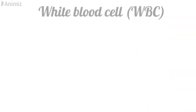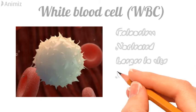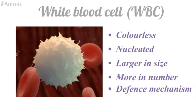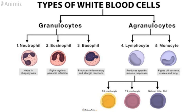The third component of blood is white blood cells, also called leukocytes. They are colorless, nucleated, larger in size, and have a role in the defense mechanism of the body. White blood cells are categorized into two types: granulocytes and agranulocytes. Granulocytes have a granular appearance, while agranulocytes do not. Granulocytes are of three types: neutrophils, eosinophils, and basophils. Neutrophils help in phagocytosis, eosinophils fight against parasitic infections, and basophils have a role in inflammation and allergic reactions. There are two types of agranulocytes: lymphocytes and monocytes. Lymphocytes produce specific immune responses through B-lymphocytes, T-lymphocytes, and natural killer cells, and monocytes fight bacteria, fungi, and viruses.